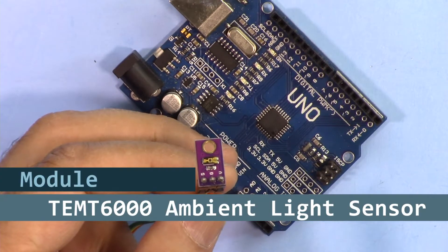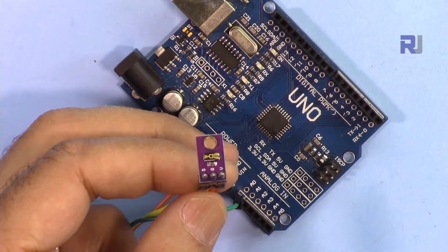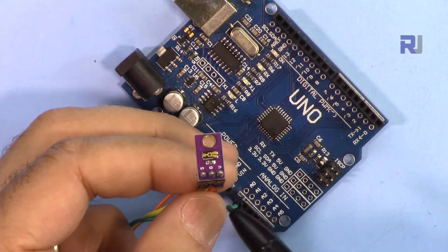Hi, welcome to an Arduino tutorial from Robojax. In this video we are going to see how we can use the TEMT6000 ambient light sensor for Arduino.